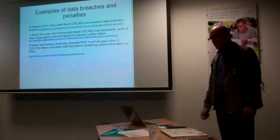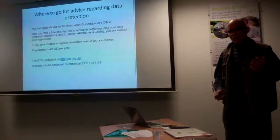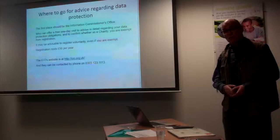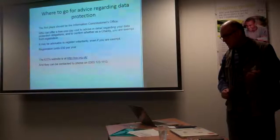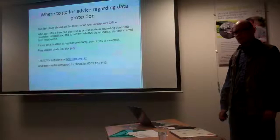Where to go for advice: the Information Commissioner's Office offers a free one-day advice session with businesses. If you're concerned about data protection, they'll send someone to go through all your processes and tell you how to stay on the right side of the law. Registration only costs £50 a year, so it's well worth it. And even if you're exempt — which some charities are — it's probably worth registering for the extra help and advice you can get.